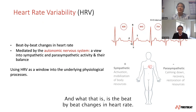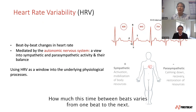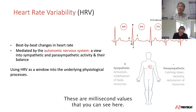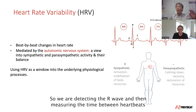What heart rate variability is, is the beat-by-beat changes in heart rate — how much the time between beats varies from one beat to the next. These are millisecond values that you can see here. So we are detecting the R-wave and then measuring the time between heartbeats.